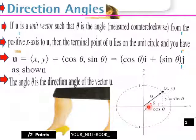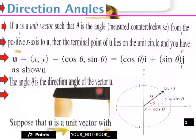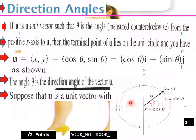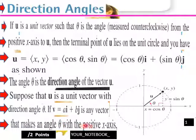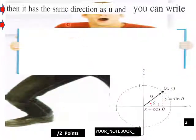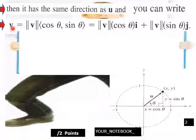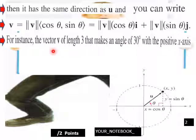The angle theta is the direction angle of the vector u. Suppose u is a unit vector with direction angle theta. If ai plus bj is any vector that makes an angle theta with the positive x-axis, then it has the same direction as u, and you can write v equals |v|(cosθ i plus sinθ j).